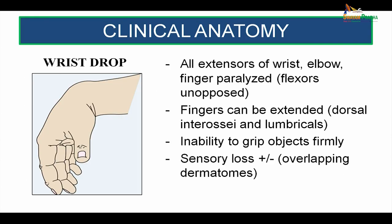Coming on to the clinical aspects of radial nerve, we consider first wrist drop, where all the extensors of the wrist, elbow, and fingers are paralyzed. There is an unopposed action of the flexors, making the wrist drop into a flexed position. The fingers can be extended to some extent because of the coexisting action of the dorsal interossei and the lumbricals. The patient is unable to grip objects firmly, and sensory loss may or may not be present because of overlapping dermatomes.